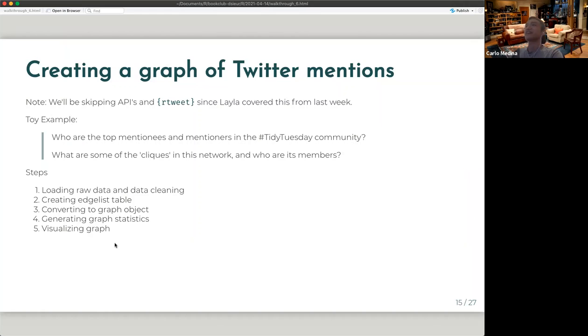So we'll start by creating a graph of Twitter mentions. This is the one that's on the book. I'll be skipping APIs in our tweet since Leila covered this quite well last week. So I'm going to just start diving into network analysis proper. For this walkthrough, my toy example would be trying to answer these questions. Who are the top mentionees and mentioners in the TidyTuesday community based on the sample data set that we have? And then what are some of the clicks in this network and who are its members? And then before we start, just an outline of the steps that we're going to go through. So first is we're going to load the table and then we'll do some data cleaning. Once we've cleaned the data, we'll convert the data frame into a graph. And then once we have the graph, we'll generate some graph statistics. And then lastly, we'll visualize the graph.